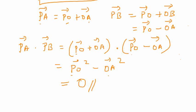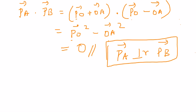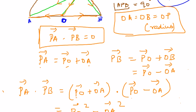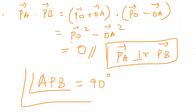So you have proved that PA vector dot PB vector is 0. So if they are 0, it obviously means that PA vector is perpendicular to PB vector. That is the angle between them is 90 degrees. So this proves that angle APB is equal to 90 degrees.